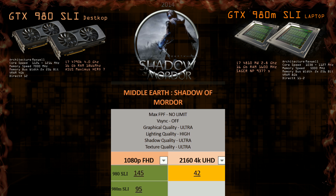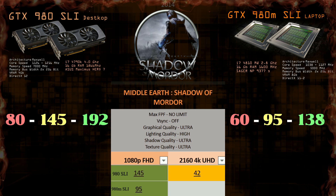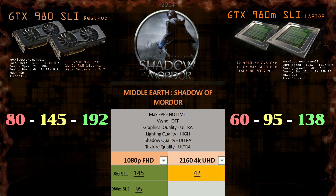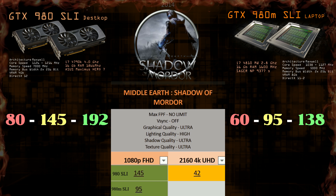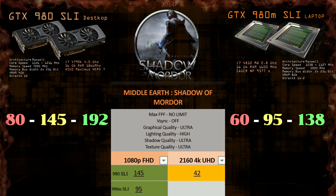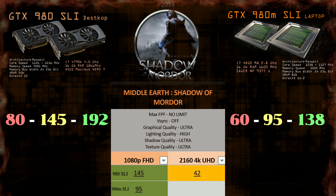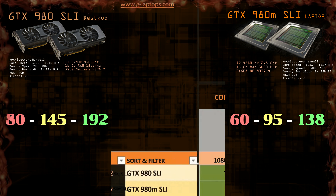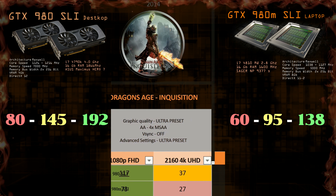Shadow of Mordor is pretty hardcore and can eat lots of your VRAM if you have a high-textures pack. GTX 980M laptops have 8GB of VRAM — I think it would be great to have the same feature on the desktop GTX 980. Looking at the frames, we can see 145 compared to 95, which is around 40% lower performance for laptops. 4K on 980 SLI is around 42 FPS, and I believe even 980M SLI will handle it with around 25 to 30 frames. SLI is not a friend with this game; for example, the R9 295X2 can push it up to 57 FPS on average.